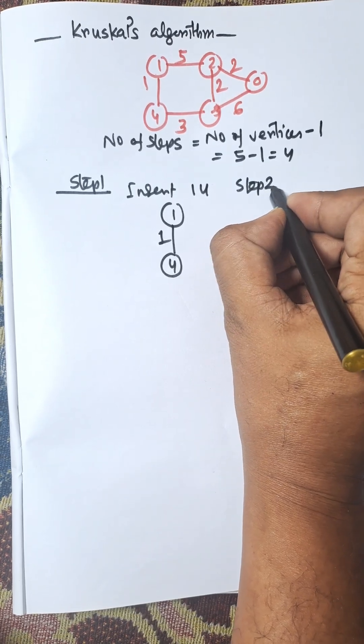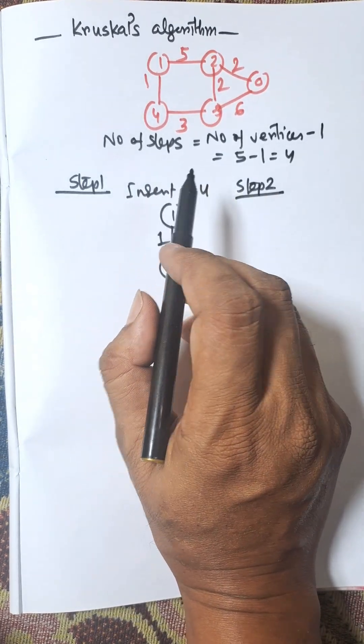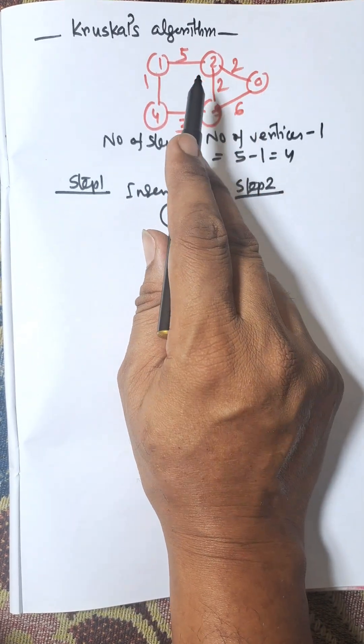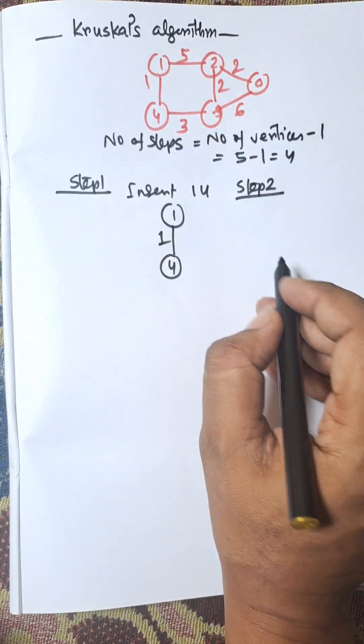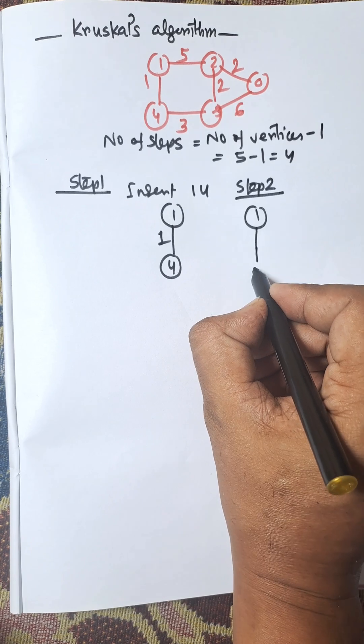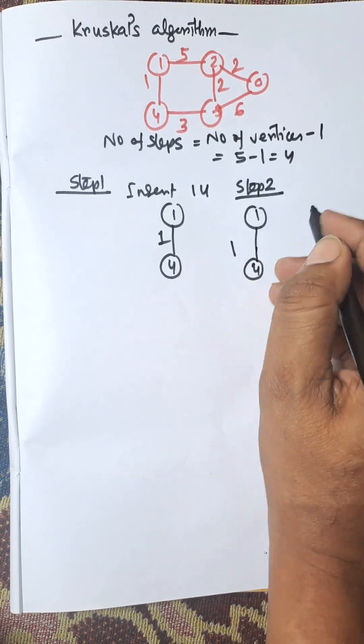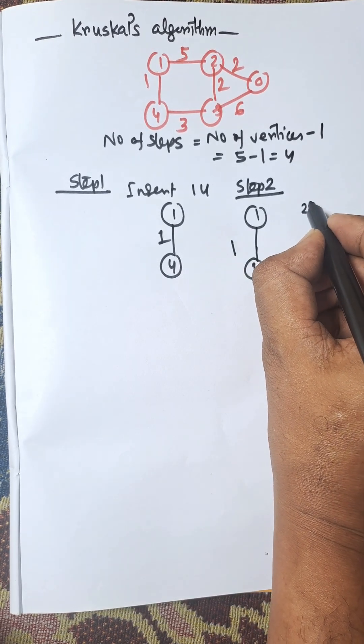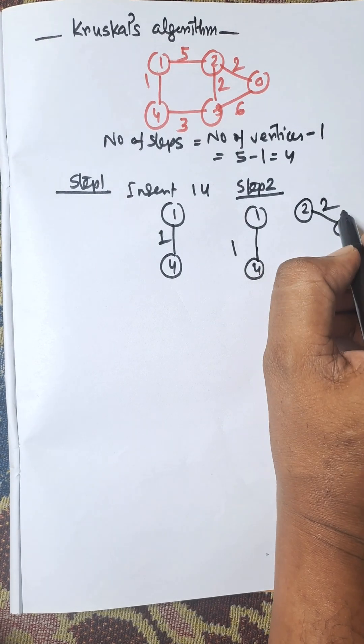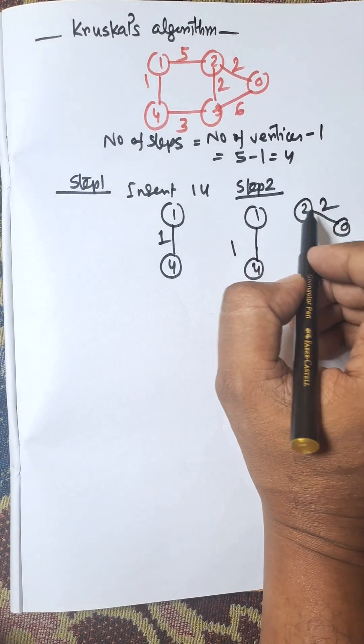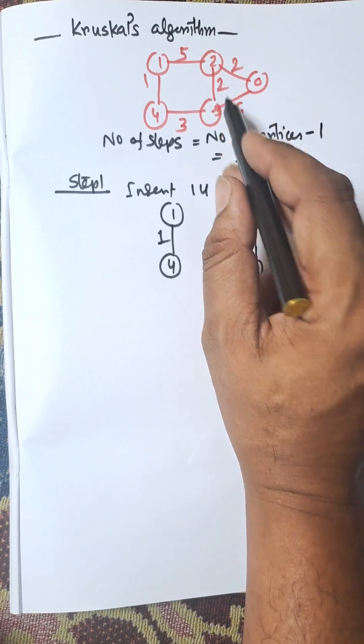Step 2: Our next minimum cost is 2. We can select either edge 2-0 or 2-3. Suppose I am choosing 2-0. In this algorithm, we need to select the minimum cost; it may be connected or disconnected. Here it is disconnected. As it is minimum, we select 2-0, or you can select 2-3 also.